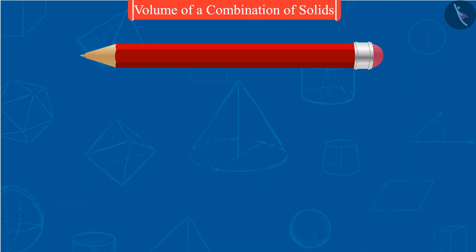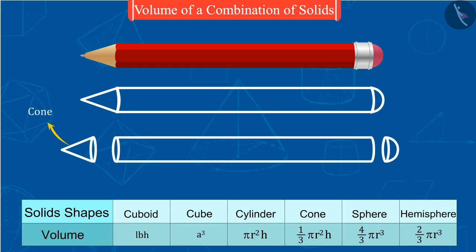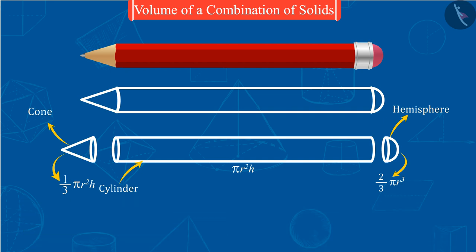Can you see that this pencil is made by the combination of a cone, a cylinder, and a hemisphere? Hence, to find the volume of this pencil, we have to add the volumes of these three basic figures. Let these be the measurements of this pencil. Let us now find out the volume of these figures one by one.